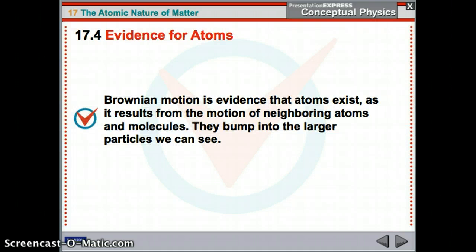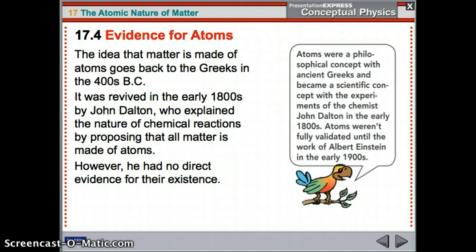All right, finally, evidence for atoms. There's something called Brownian motion. It's named after a guy named Brown. And that's evidence that atoms exist. What it is, is that atoms move around, bump each other, and then that motion is what tells us there's something there. So they move around, they bump larger particles that are larger than the wavelength of light, so we can see them, so we know that they're there.